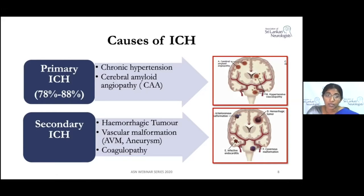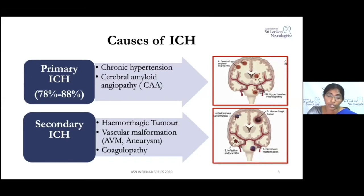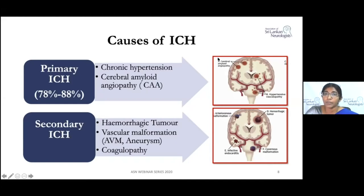In adults, chronic uncontrolled hypertension is the major primary cause, and the second primary cause is cerebral amyloid angiopathy, which is increasing due to the aging population. Looking at the pattern of bleeds, cerebral amyloid angiopathy forms microbleeds and lobar bleeds in the periphery, whereas chronic hypertension produces very deep-seated bleeding.